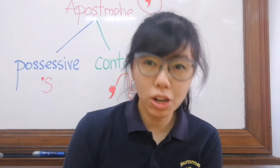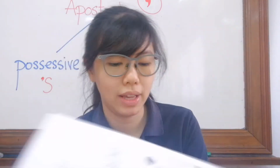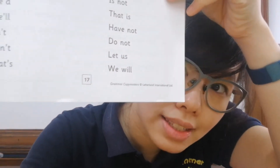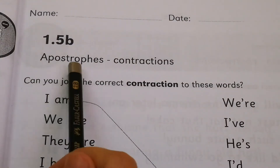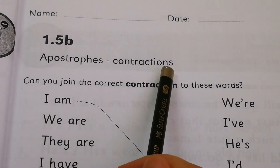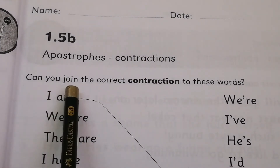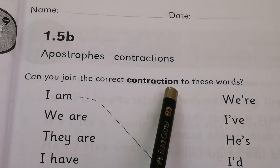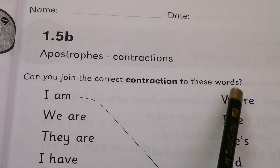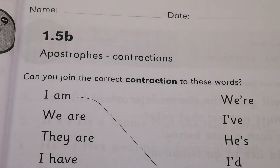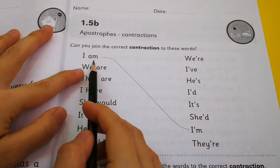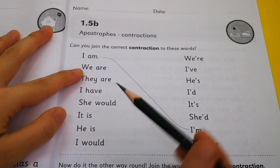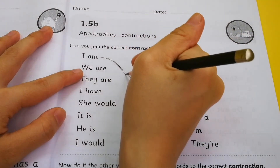Let's practice our contractions. Bring out your grammar book and turn to page 17. Remember to write today's day and date. Let's read the instructions together — Apostrophes: Contractions. Can you join the correct contraction to these words? The first one has already been completed for you: 'I am' — the contraction is 'I'm'. All you need to do is follow the dotted line.